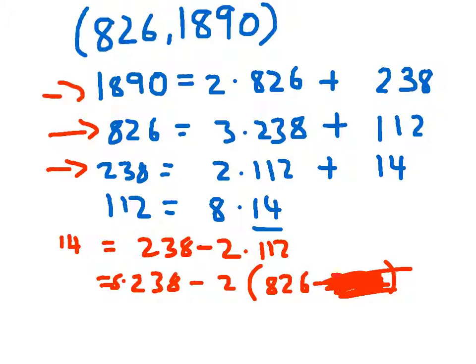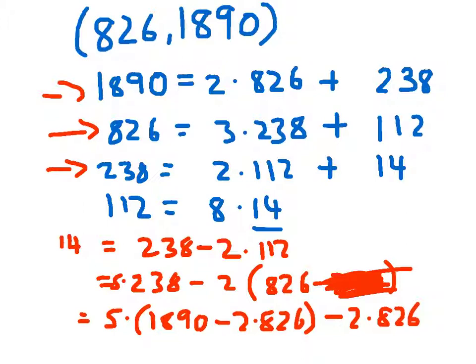238 from this line equals 1890 minus 2 times 826. Subtract the other 2 times 826, and the final score should be that 14, the highest common factor of these two numbers, is equal to 5 times 1890, subtract 12 times 826. I've just checked, there was a mistake there. See if you can spot it.